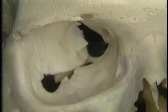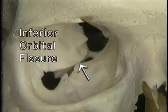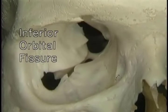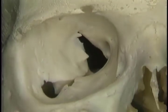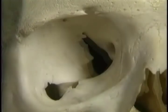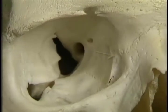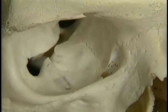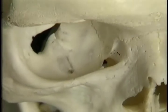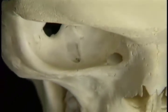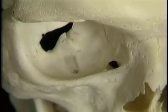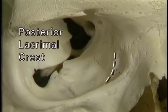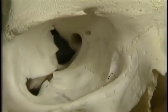In the living body, the inferior orbital fissure, which forms an apparent gap between the floor and the lateral wall, is bridged over with fibrous tissue. This groove, the lacrimal groove, leads downwards into the opening for the nasolacrimal duct, which takes tears to the nasal cavity. The rim of the lacrimal groove is formed by the posterior lacrimal crest behind and the anterior lacrimal.